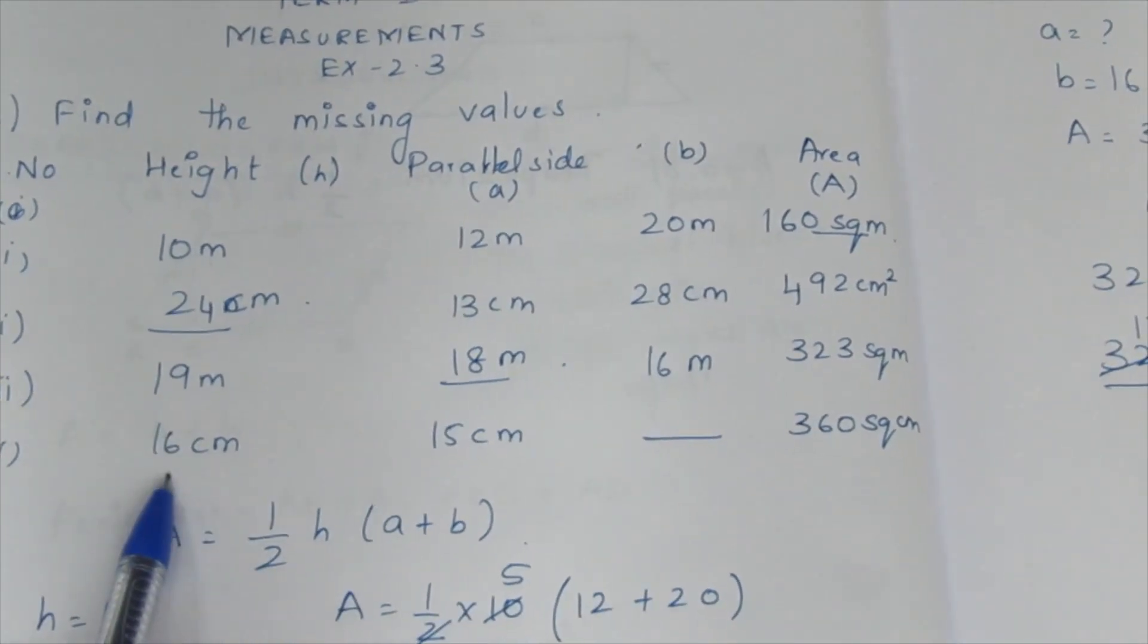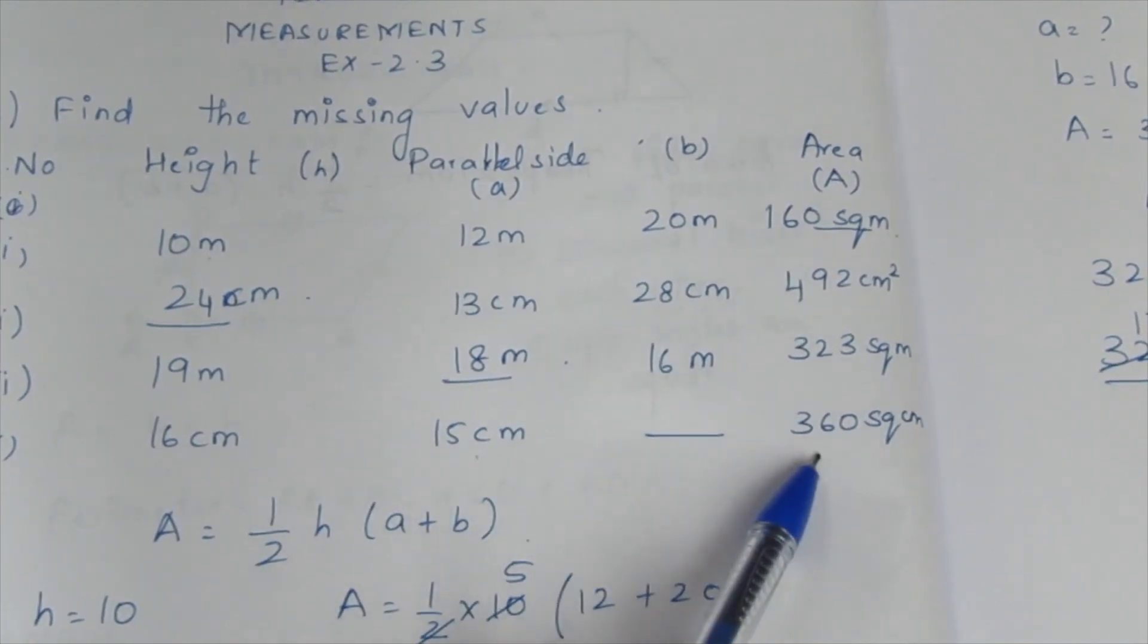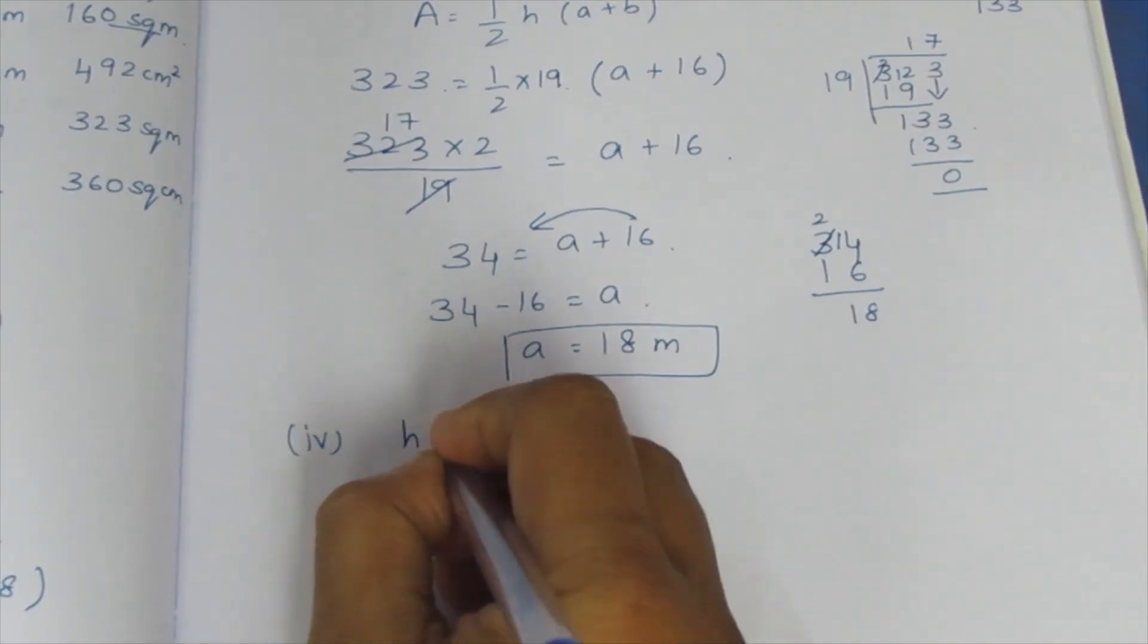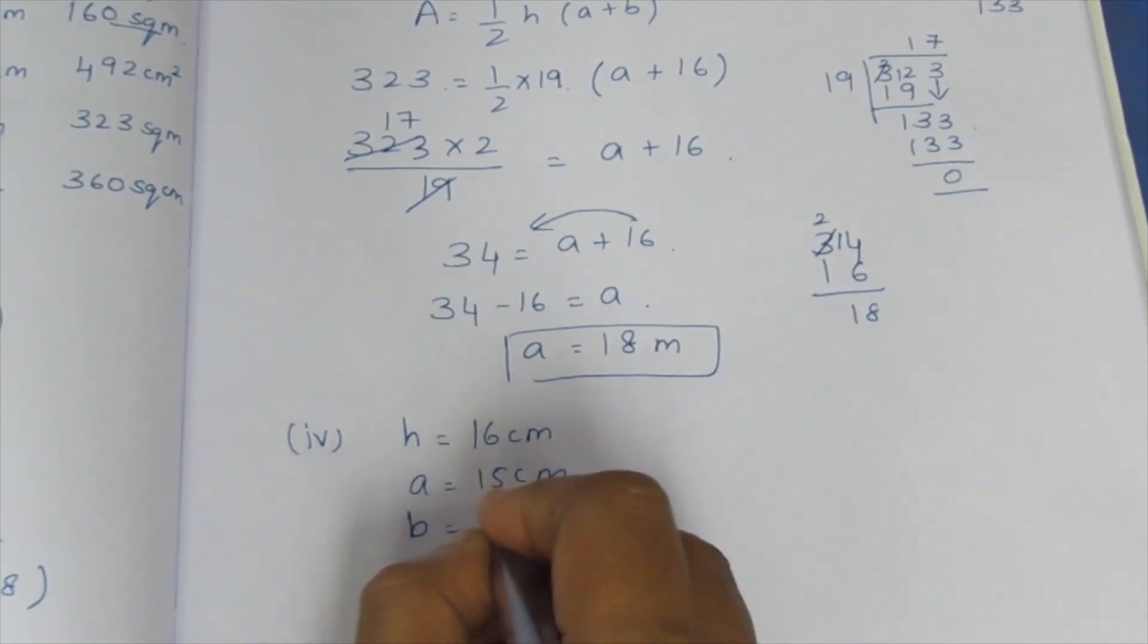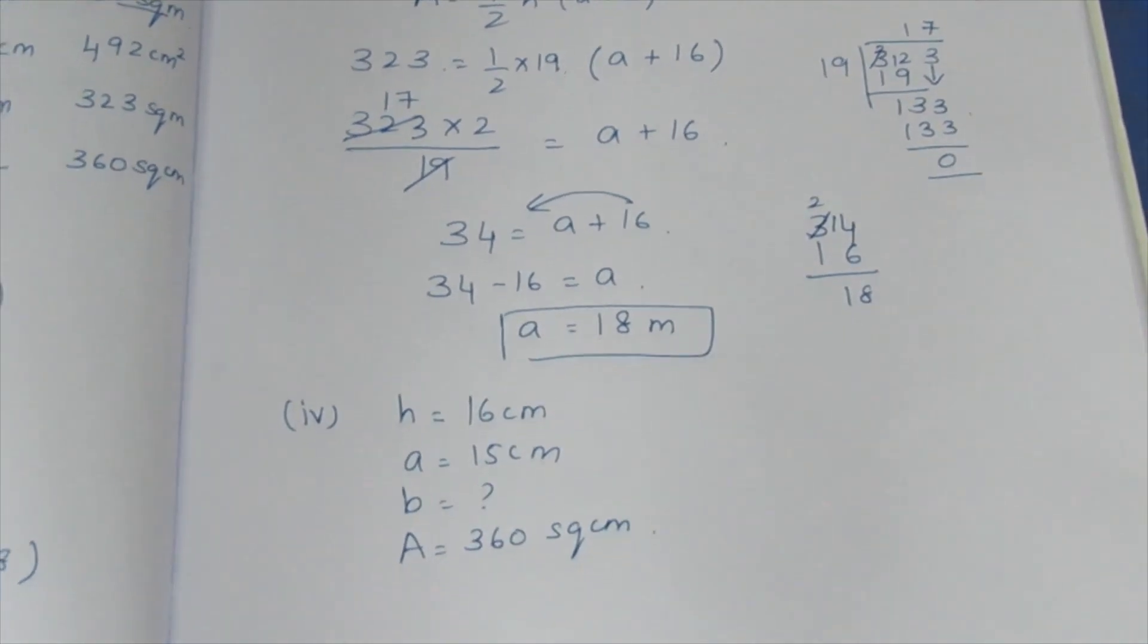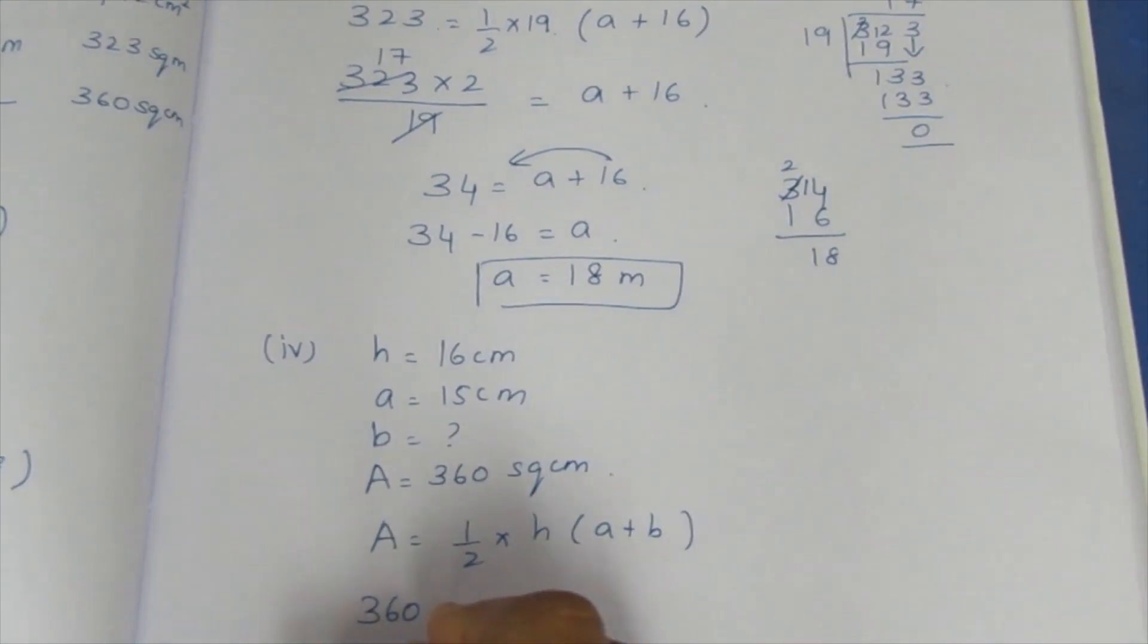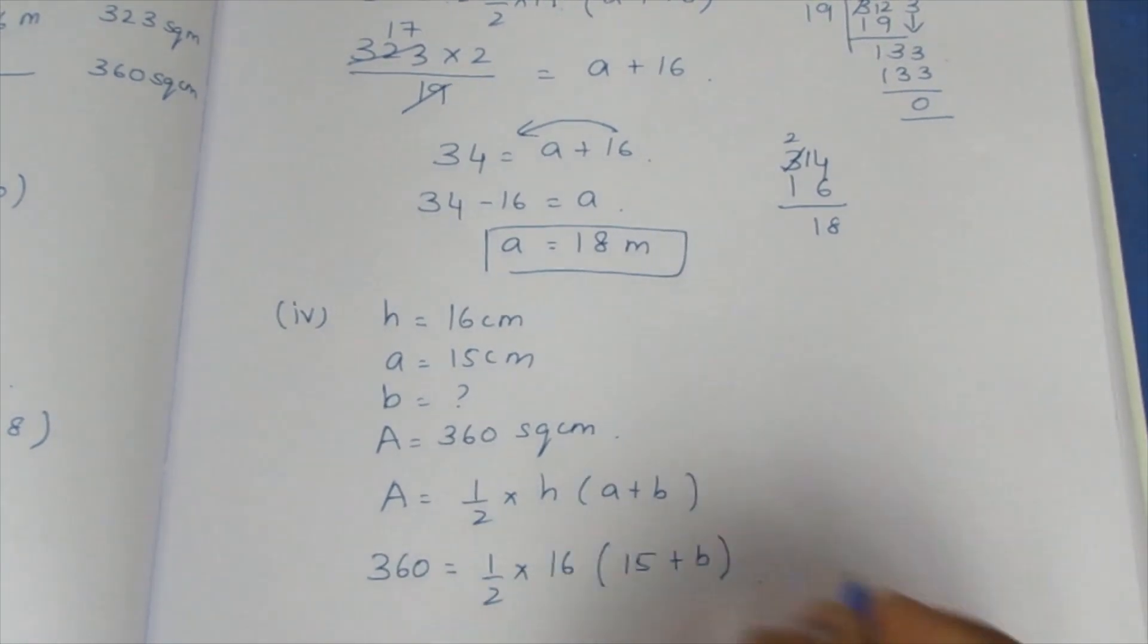If we see the question, height is 16 centimeters, A is 15, B is unknown, area is 360. This is 4th sum, find area. That is area formula. Height is equal to 16cm, A is equal to 15cm, B is unknown. Area is equal to 360 centimeter squared. Area formula: Area is equal to 1 by 2, H is equal to 16, A is equal to 15, B is unknown.